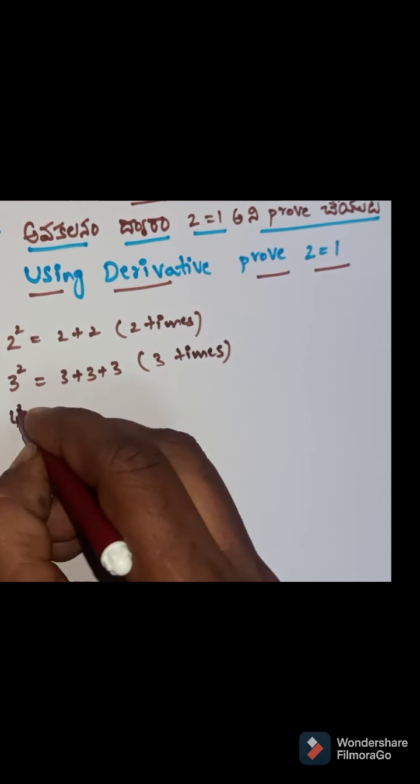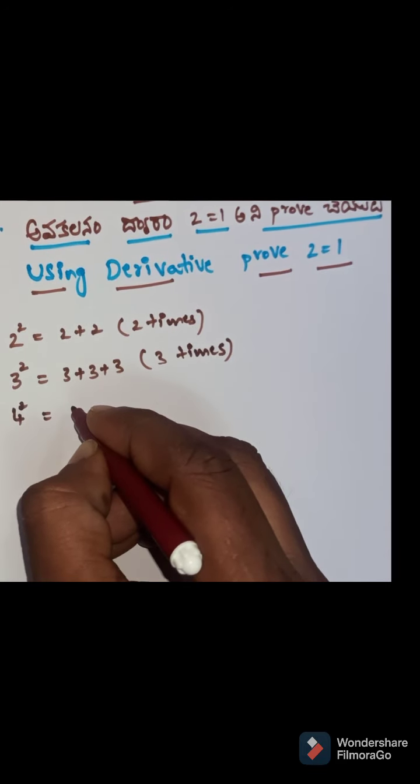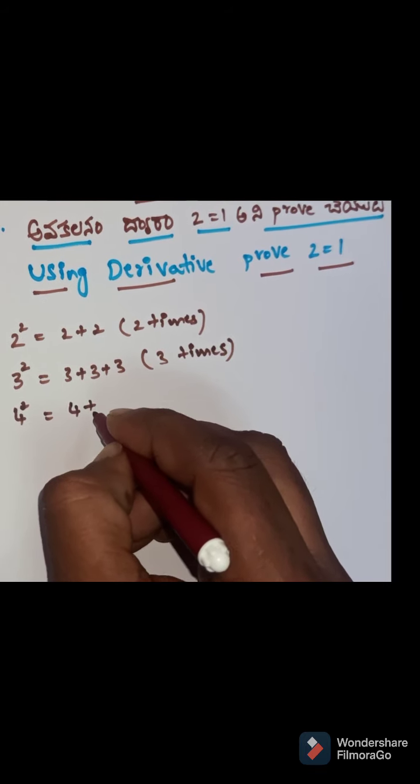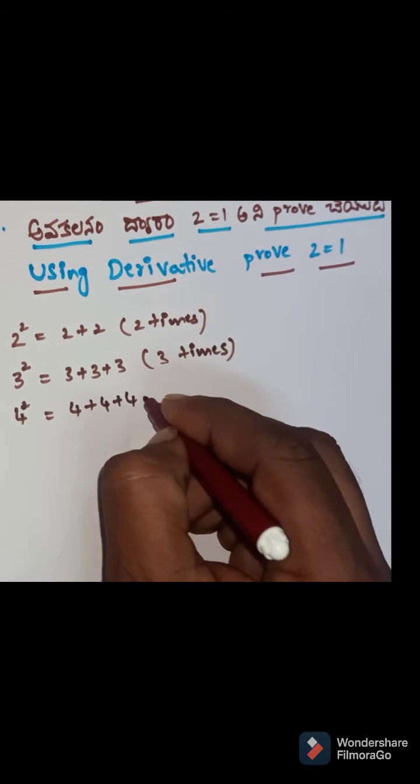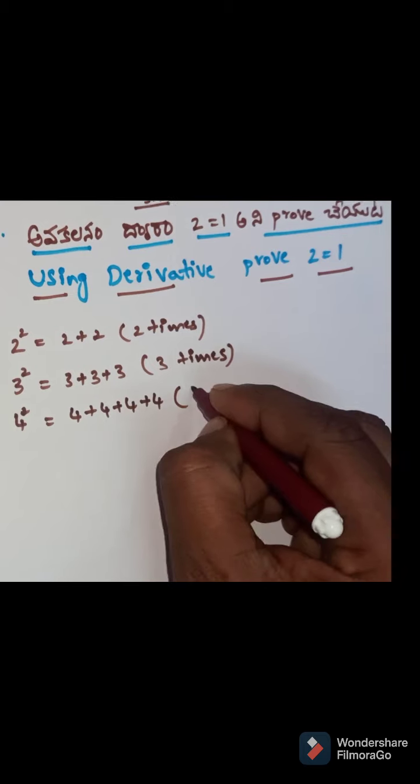Similarly, 4 squared is equal to 16. So you know, 4 plus 4 plus 4 plus 4 means 4 times.